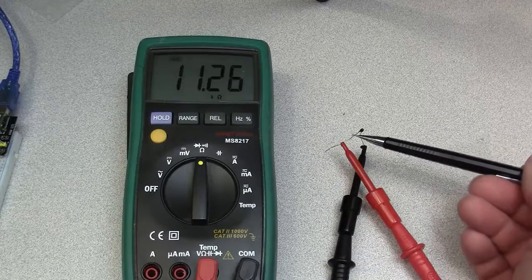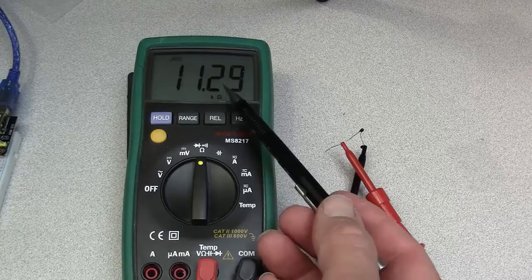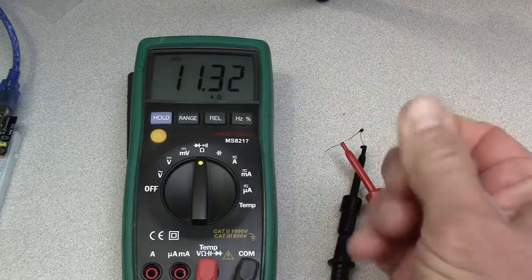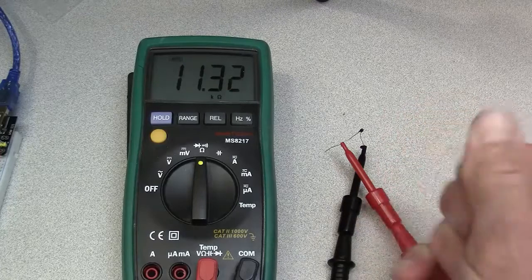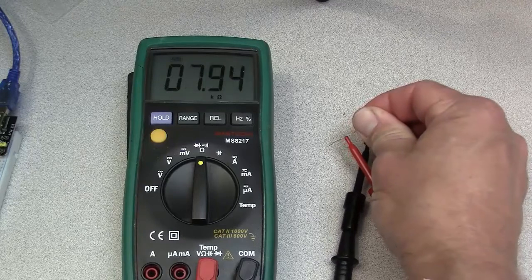When the thermistor is at room temperature, the thermistor resistance is a little over 11 kiloohms. If I warm my fingers a little bit by rubbing them together and pinch the thermistor to warm it up, the resistance goes down.